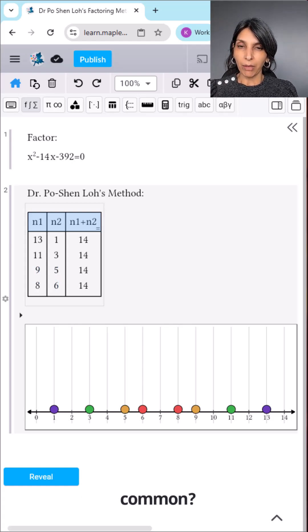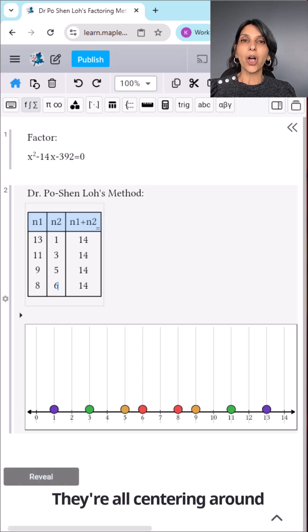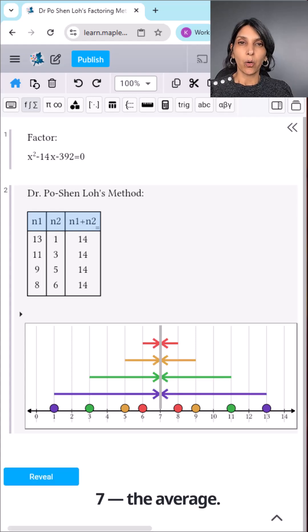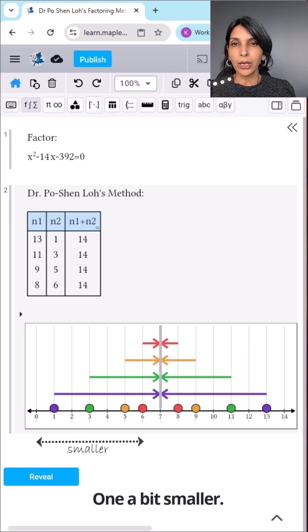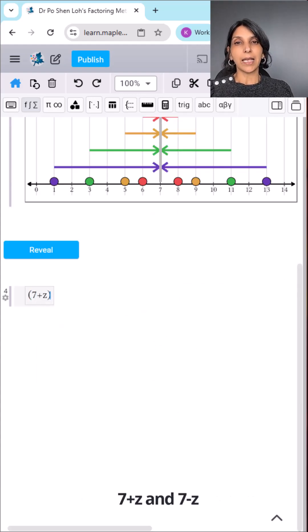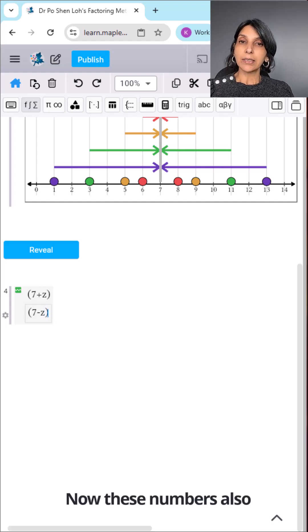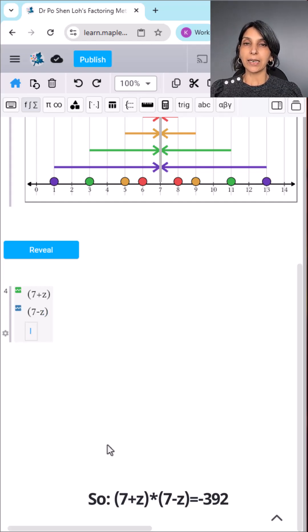What do they have in common? That's right, they're all centered around 7, the average. One a bit bigger, one a bit smaller. So let's call those numbers 7 plus z and 7 minus z. Now these numbers also need to multiply to negative 392. So 7 plus z times 7 minus z equals negative 392.